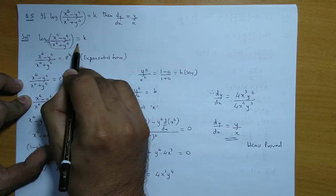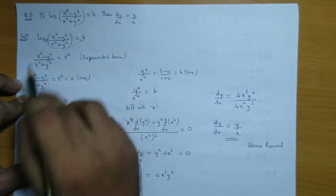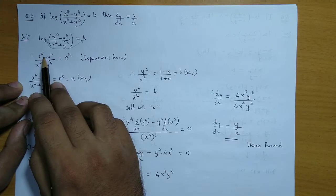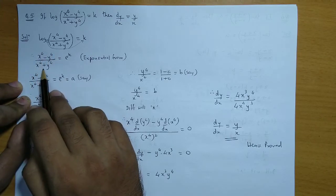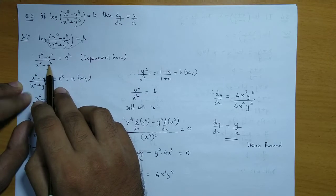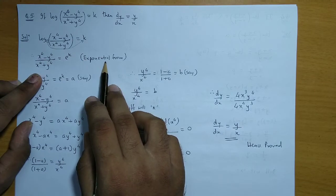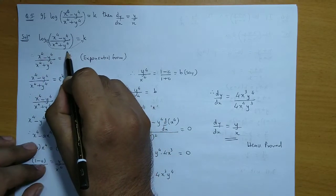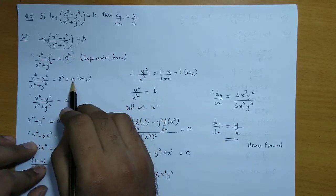So this e will go here. This becomes e raise to k. And on the left hand side remains (x⁴ - y⁴)/(x⁴ + y⁴). So basically we are converting log form into exponential form. Now on the right hand side, e raise to k is a constant. So we give this constant the name a.